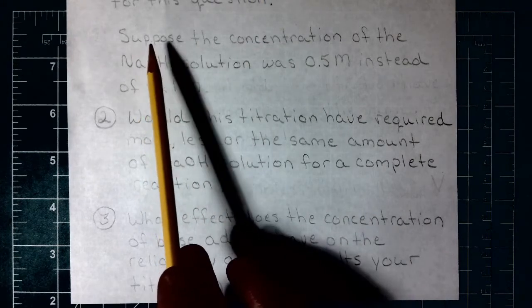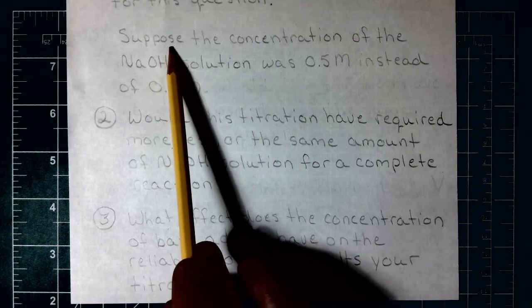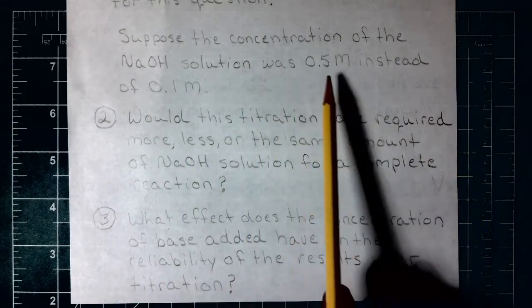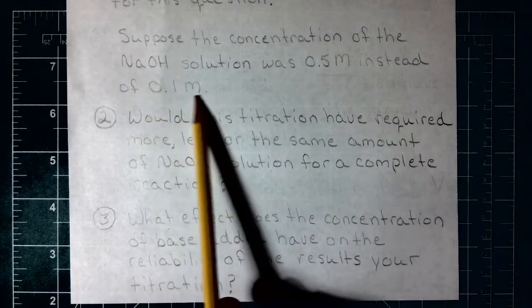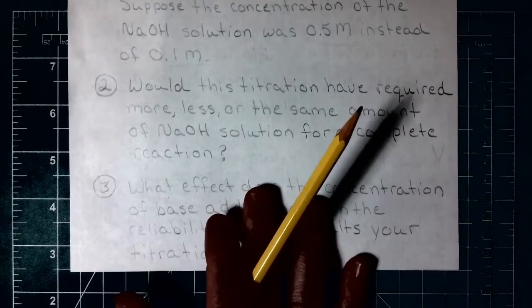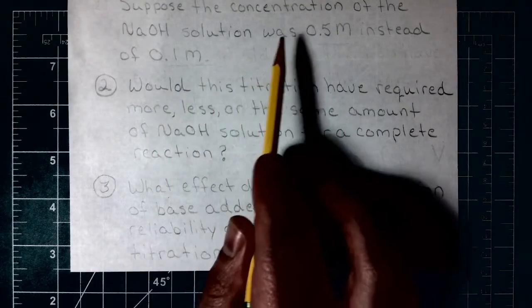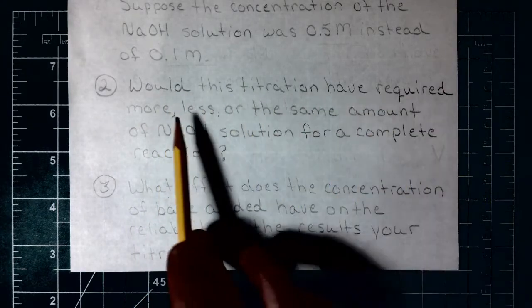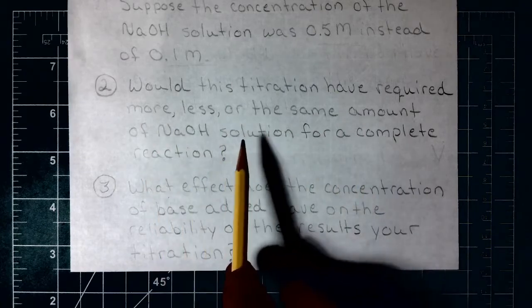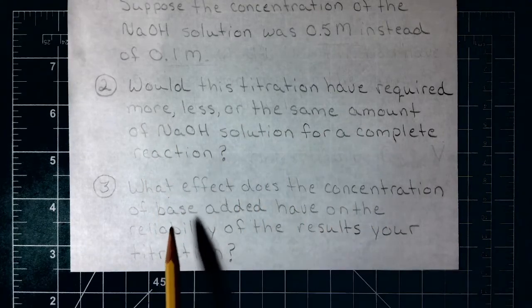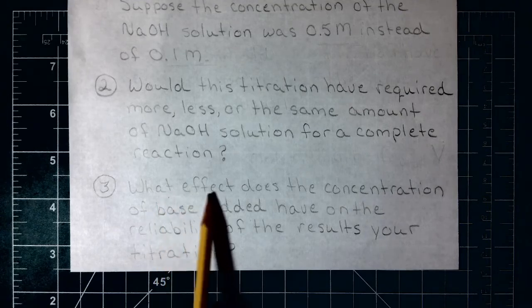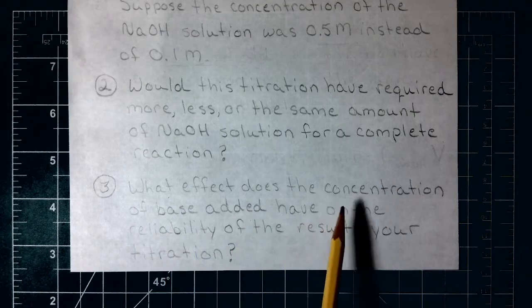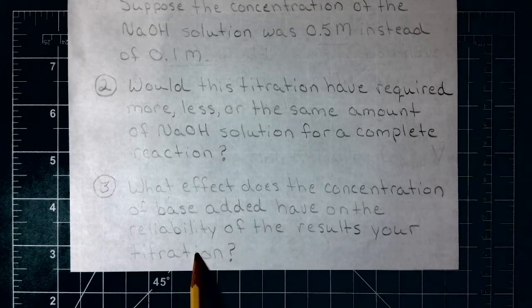In the next post-lab question, suppose the concentration of the sodium hydroxide solution was 0.5 molar instead of 0.1 molar. It asks two questions about what would be true if it were five times more concentrated: would the titration require more, less, or the same amount of sodium hydroxide solution for a complete reaction, and what effect does the concentration of base added have on the reliability of the results?